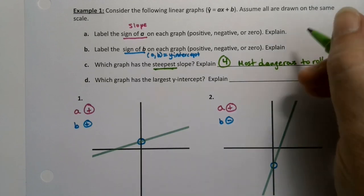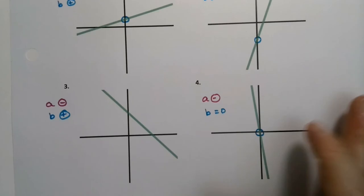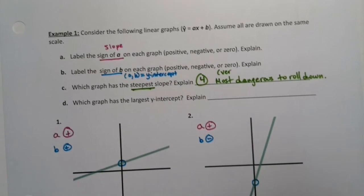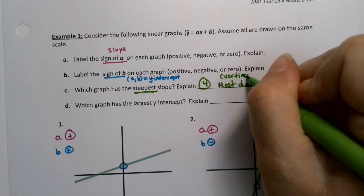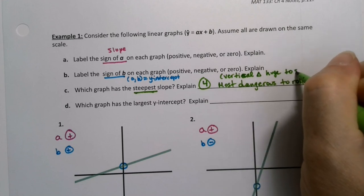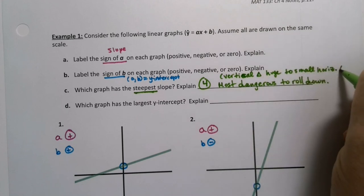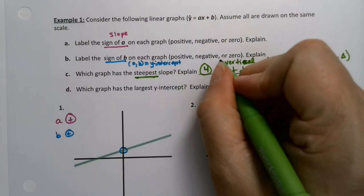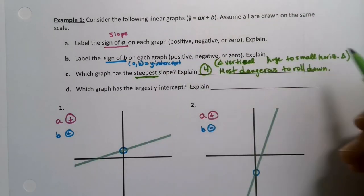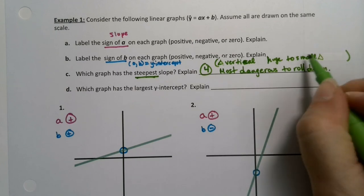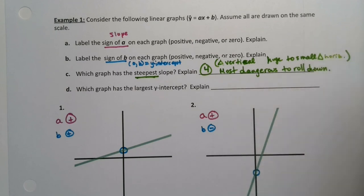In other words, its vertical change is very large. It has, if you do rise over run like this, it has a huge rise to a little bit of run. So the change in vertical is huge compared to the small change in horizontal. In other words, your rise is huge compared to your run.